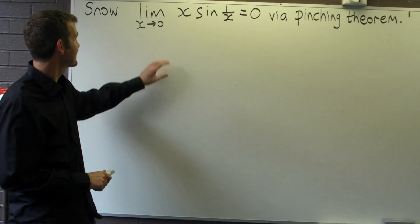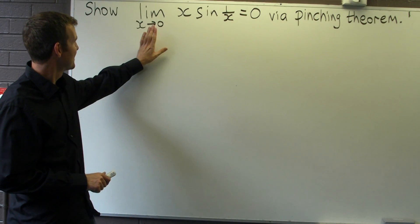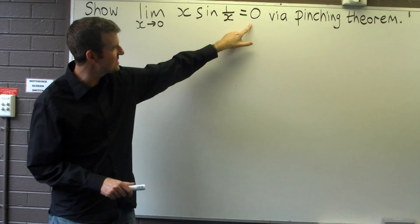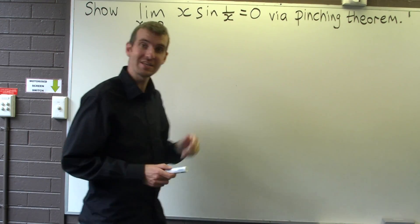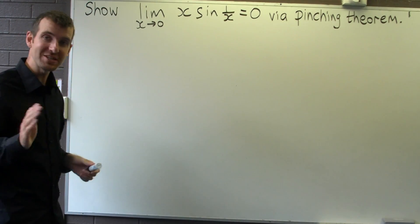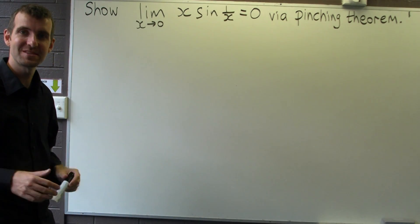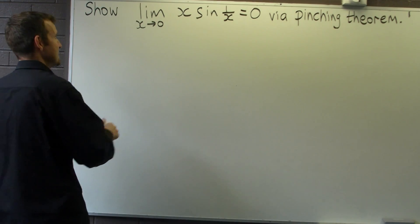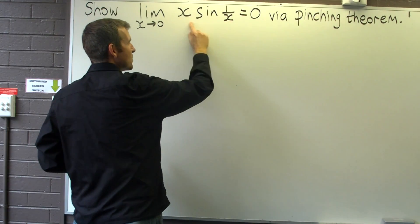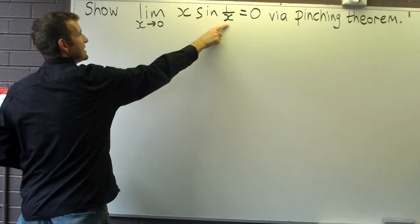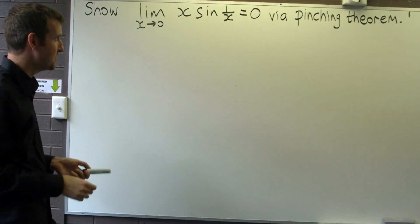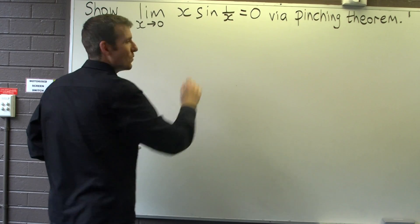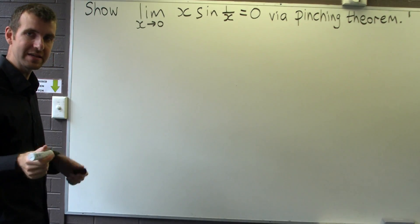Here we're faced with the limit of this function and we're asked to show that it's zero by the pinching theorem. Remember the pinching theorem involves simple inequalities, so what we need is some simple inequalities involving this function. Let's consider sine of 1 over x — are there any inequalities for sine?